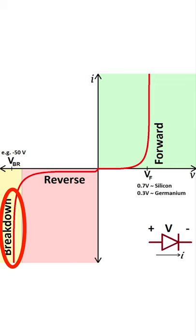But after crossing a threshold limit of reverse voltage, a very high reverse current flows through the diode.